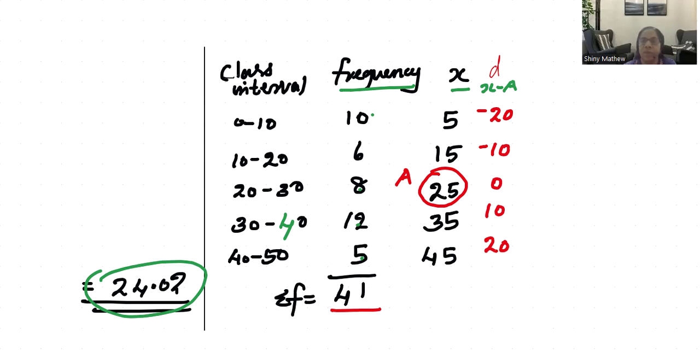d' equals d divided by i, where i is the highest common factor. We will divide by 10.